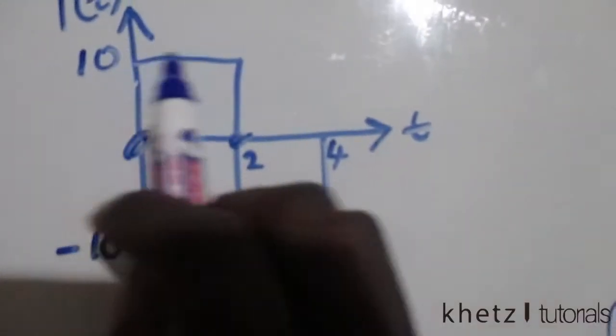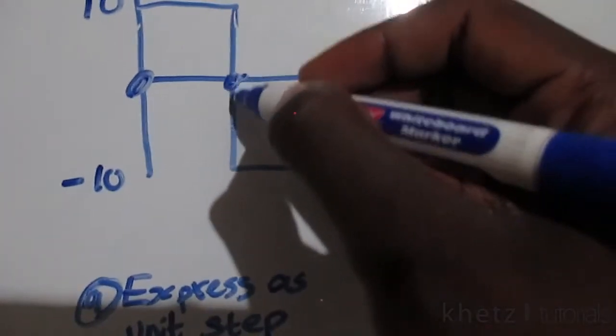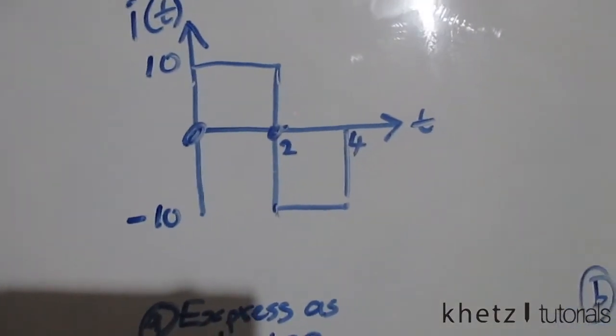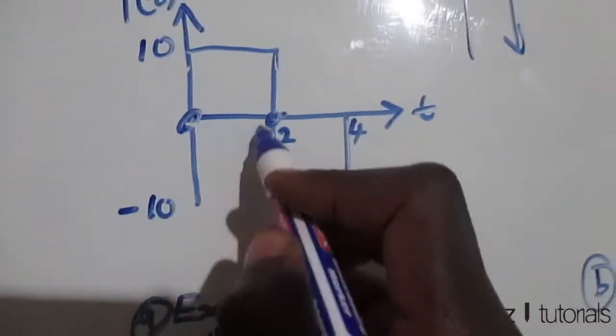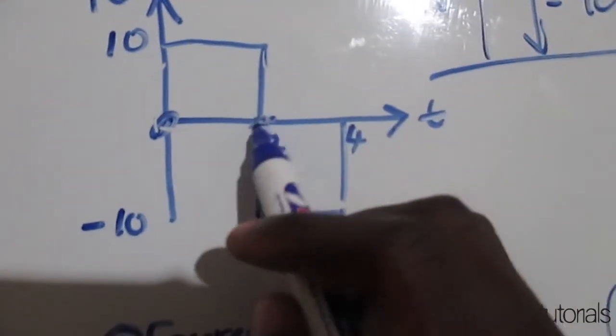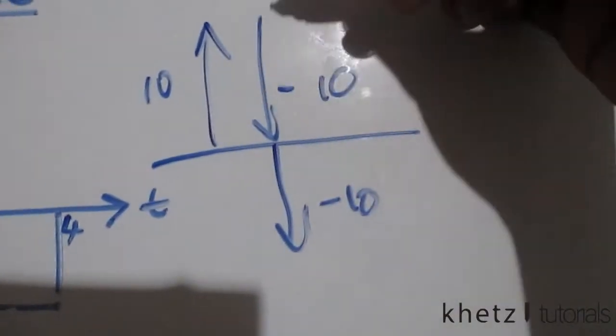We had a step function supposed to go infinitely with a value of 10, but we get to that point and go down further. Using basic logic: we went 10 up, then came back to the same baseline, so we went 10 up and 10 down. But we're actually continuing and going 10 down again.